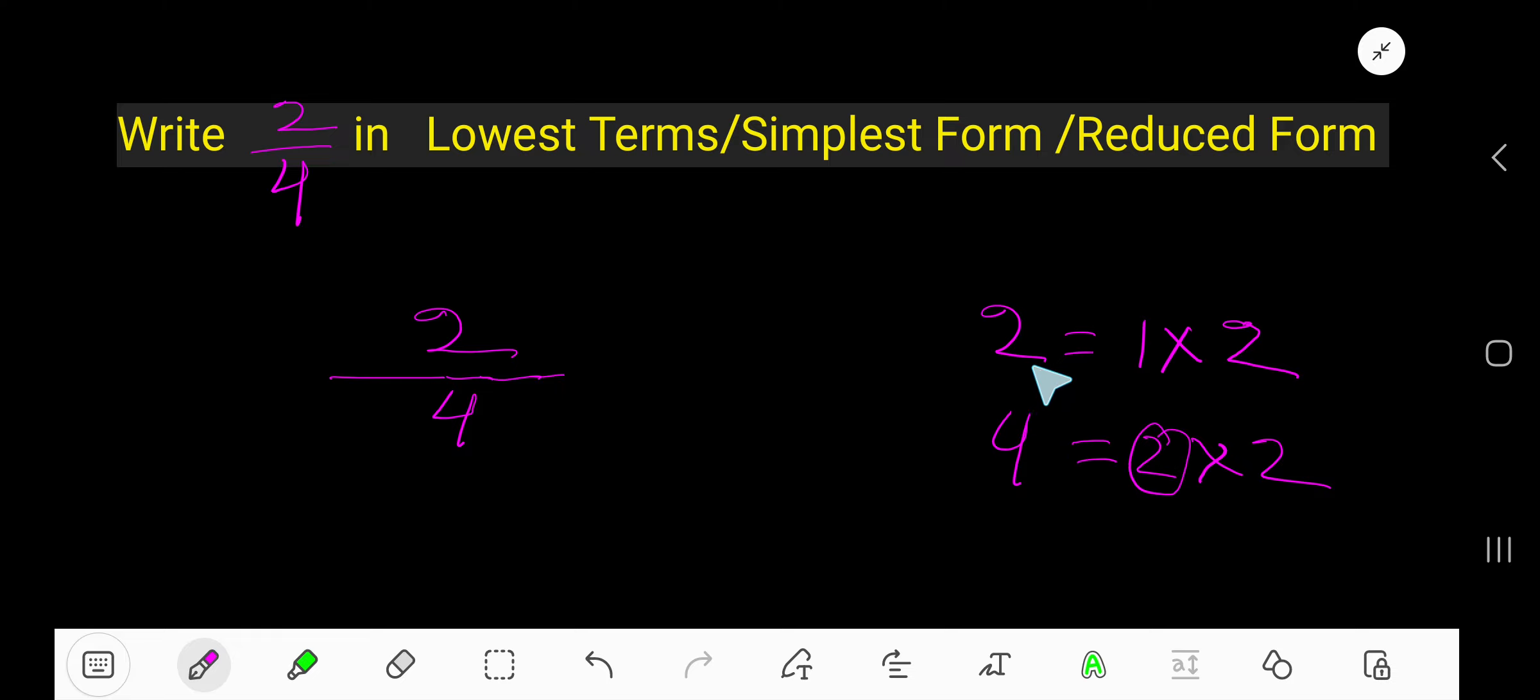So here, the common factor between 2 and 4 is 2. Of course, 2 is the greatest common factor. Now divide numerator and denominator by the common factor.